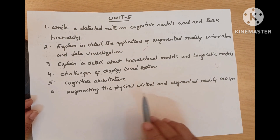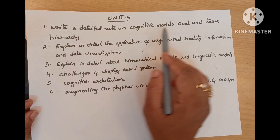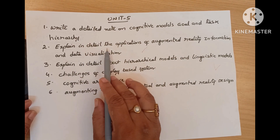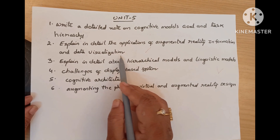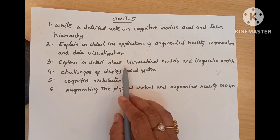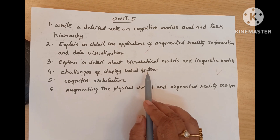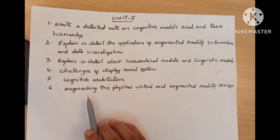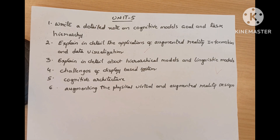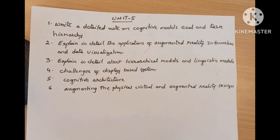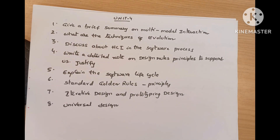Unit 5 questions: write a detailed note on cognitive models, goal and task hierarchy. Explain in detail the applications of augmented reality, information and data visualization. Next, explain in detail about hierarchical models and linguistic models. Explain the challenges of display-based systems. Draw a neat sketch and explain cognitive architecture. Next, augmenting the physical — virtual and augmented reality design. These are all very important questions and mostly all are repeated in the old question paper.